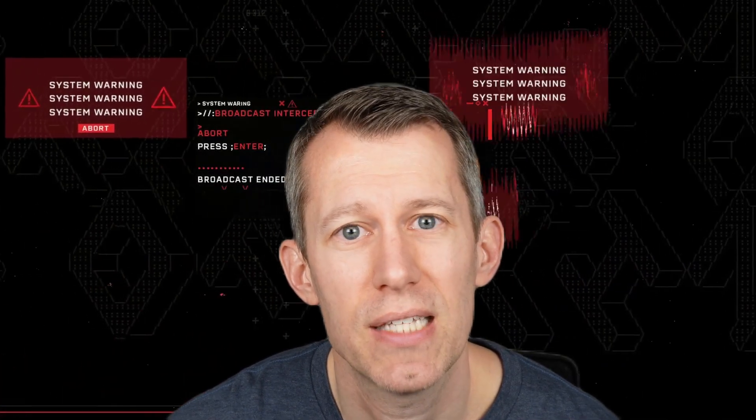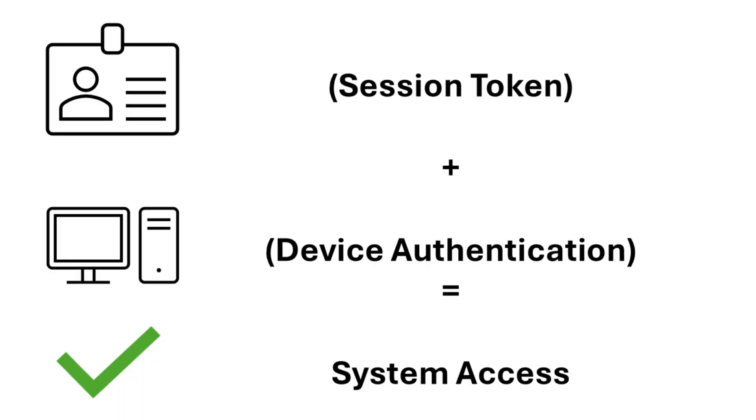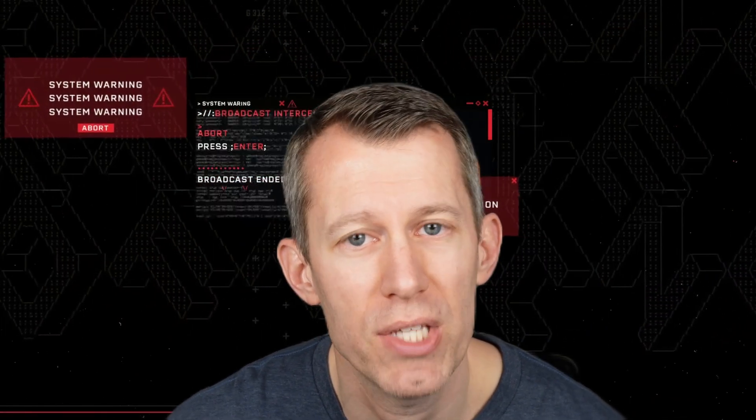The other option is device authentication. Similar to the YubiKey, device authentication requires not only your username, password, and MFA, it also requires the device you're coming from to be registered with that service. So if a third party intercepts your session token but it's not on an official device like a corporate device, the session token will no longer be valid and can't be used. A good example of this is Office 365 and conditional access — device authentication is another way you can protect yourself from this adversary in the middle attack.